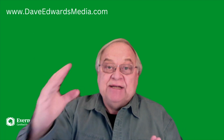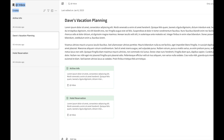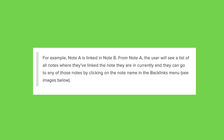On the itinerary, I want to make sure that I have links to all of those individual notes so I can just follow along. So now you have note A linked in note B, and from note A we're going to see a list of all the notes that have linked the original note. You can click on any of those in the backlinks menu.